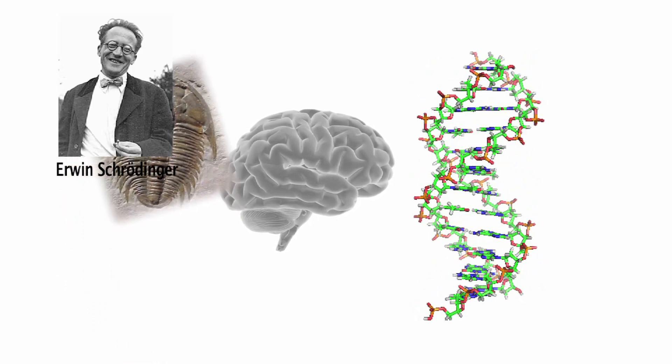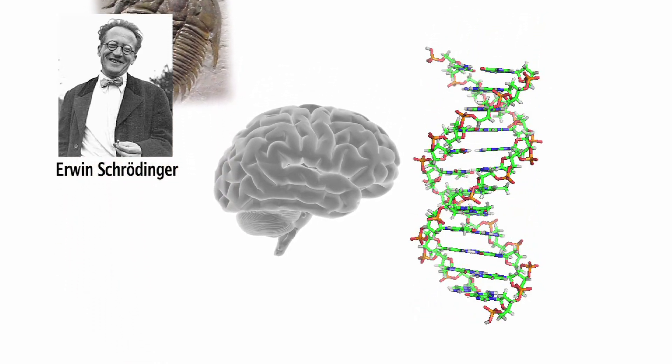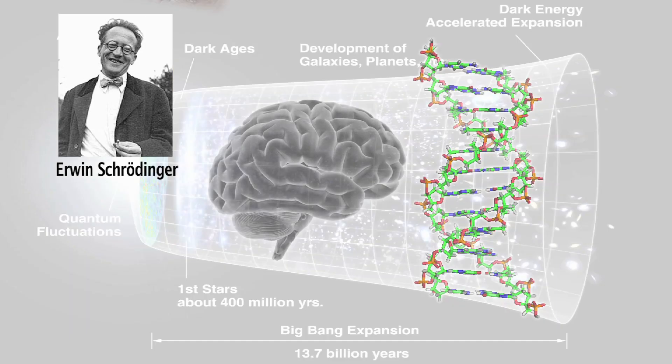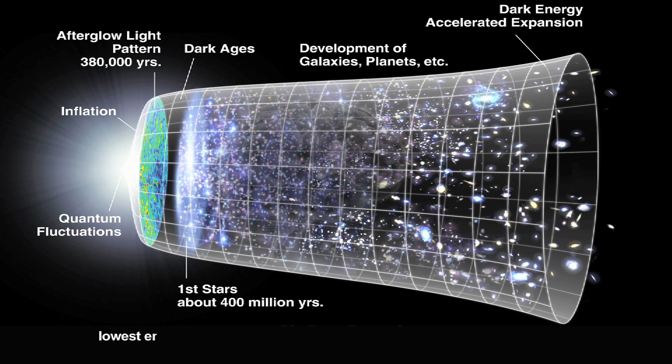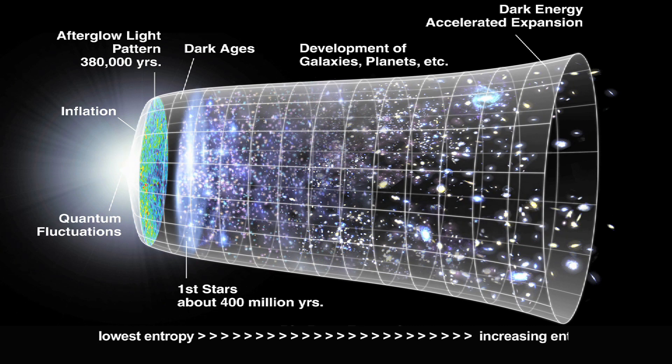Erwin Schrödinger's definition of life is that it's a unique process which creates pockets of negative entropy. Physicists talk about the beginning of the universe being the most highly ordered, lowest entropy version of our universe, and how the arrow of time represents an overall climb in the amount of entropy,